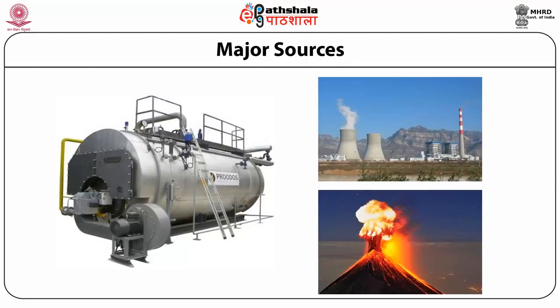This picture shows the various sources of release of oxides of sulfur into the atmosphere. The first picture shows smelter industries, which are a major source. The second picture shows a volcanic eruption, a natural source of oxides of sulfur. The third picture shows the stack of a thermal power plant, another major source of oxides of sulfur.